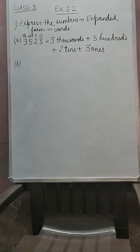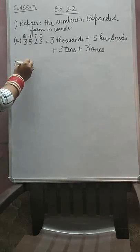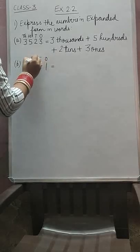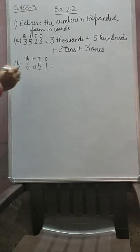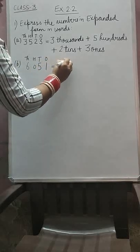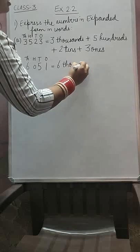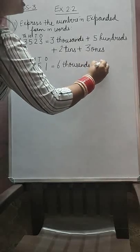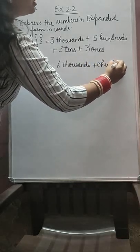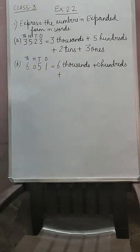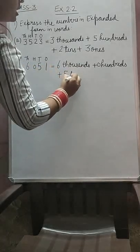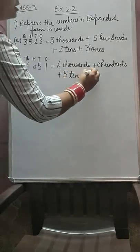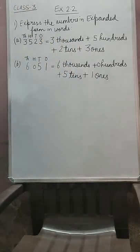Now we will do its second part. That is 6, 0, 5, 1. This is 1's place, 10's place, 100's place, 1000's place. How many 1000's we have? 6000's. How many 100's we have? 0 100's — it's your choice whether you write it or not. How many 10's we have? 5 10's. And how many 1's we have? Only 1.